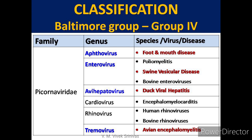Classification: Picornaviridae family is classified under the Baltimore Group 4. Some of the veterinary important viral diseases under this family are foot and mouth disease (FMD) under the genus Aphthovirus, swine vesicular disease under the genus Enterovirus, duck viral hepatitis under the genus Avihepatovirus, and avian encephalomyelitis under the genus Tremovirus.